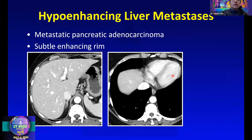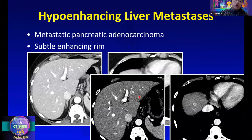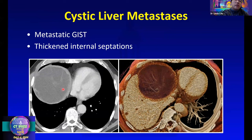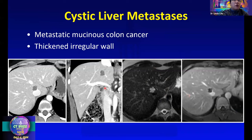Some classically hypoenhancing metastases may show a subtle enhancing rim on arterial phase images, and with these subtle lesions you may have to adjust the windowing of your liver to bring out the enhancement pattern. In cystic metastases, this case of GIST shows thickened internal septations that clue you in that it's not a simple cyst. Sometimes cystic metastases can be tricky — this case of metastatic mucinous colon cancer might look like a cyst at first glance, but it has internal septations and an irregular wall, better appreciated on the accompanying MRI.